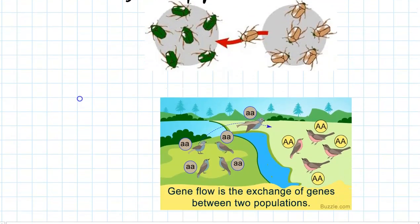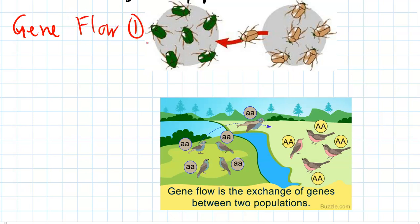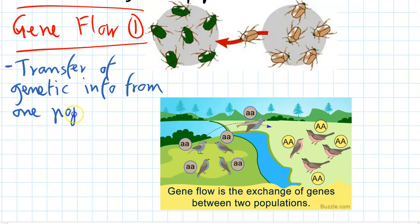The last way that evolution can happen is through gene flow. This one's probably the most simple out of all. Gene flow is just when we have individuals that move out of the population or new individuals that migrate into the population. That means they're bringing in new alleles and new variation, or if they're emigrating out, they're taking away variation. So gene flow is the transfer of genetic information from one population to another, and it's caused by migration.